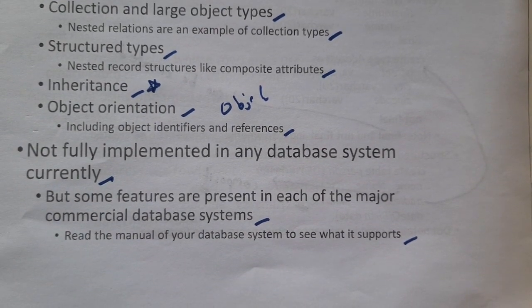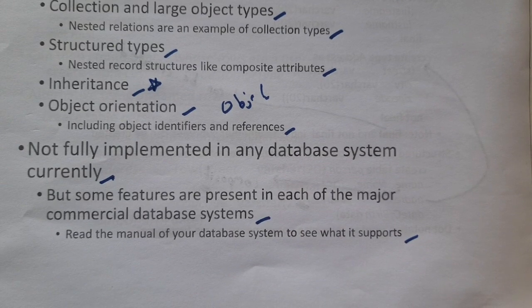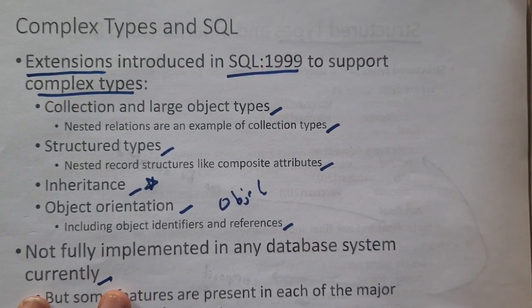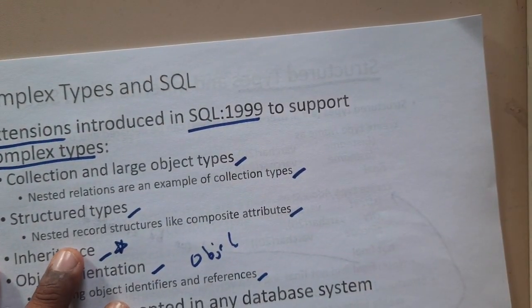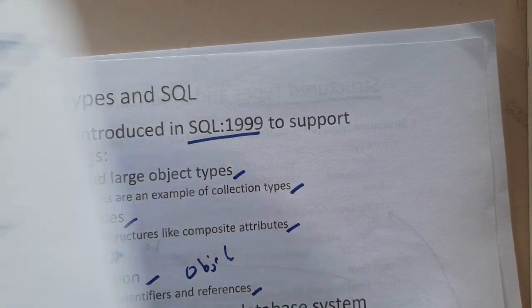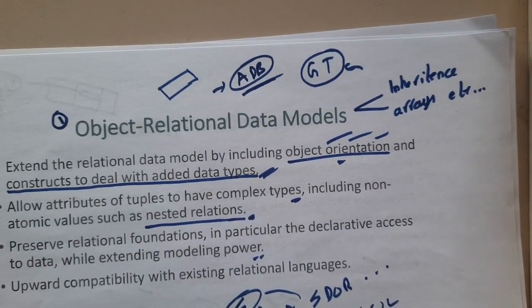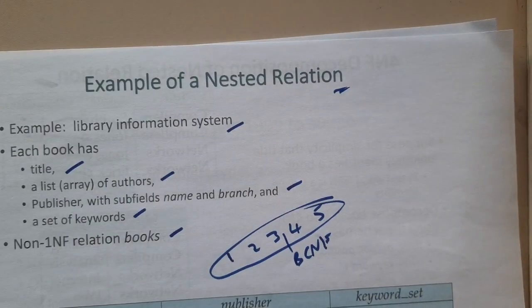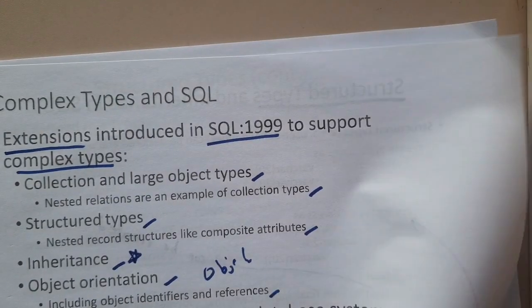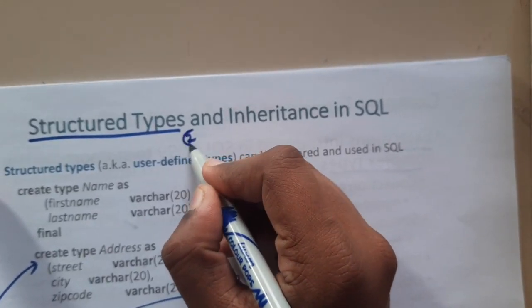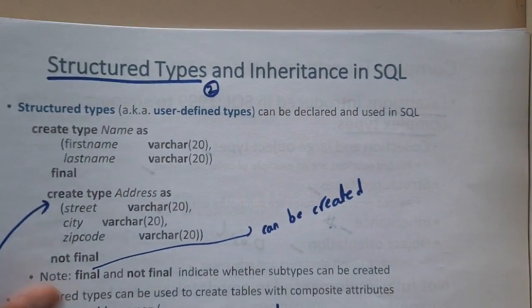You can read the manual of a particular database version to know which features are supported. I hope everyone got some basic idea about object-oriented SQL. Some features have been added — inheritance, arrays, lists, nested values, and similar things. In the next lecture we'll go through structured types. Thank you for watching.